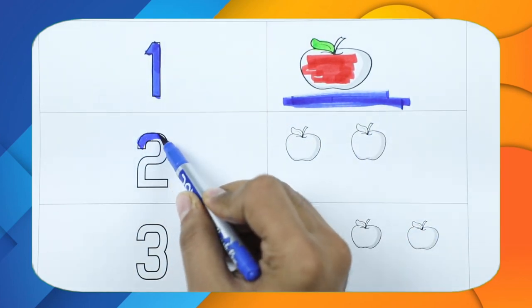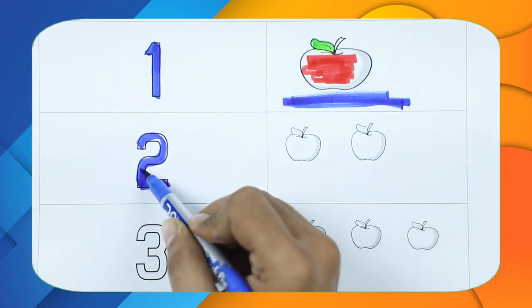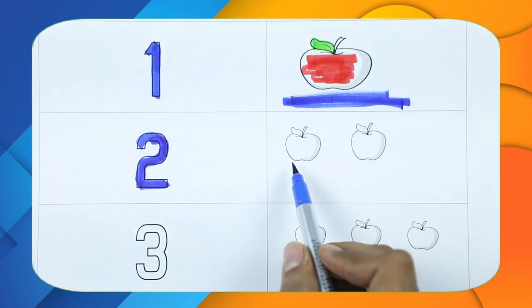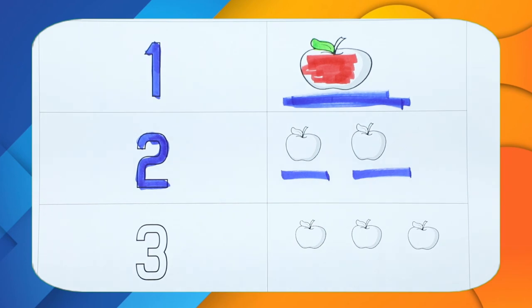Number 2, number 2 with blue color. How many apples here? 1 apple, 2 apples, it's 2 apples.